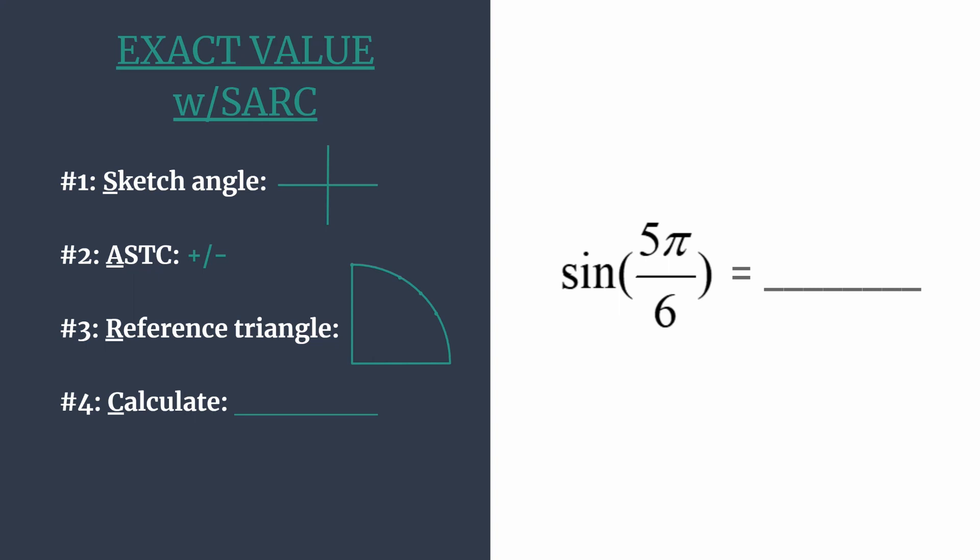So let's do this for sine of 5π over 6. Let's start by sketching the angle 5π over 6. We know that this is less than one full rotation, that would be 2π in radians, and we also know that it's counterclockwise rotation because it's a positive angle.